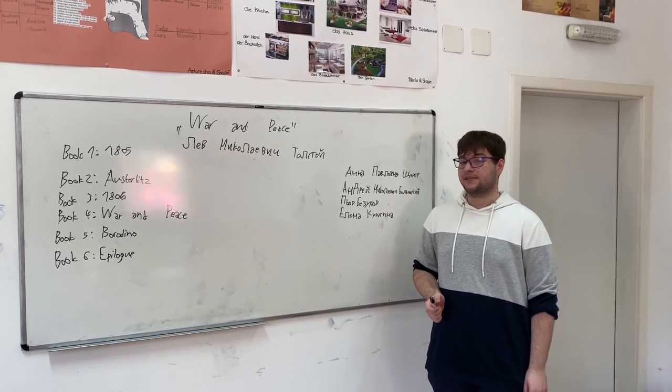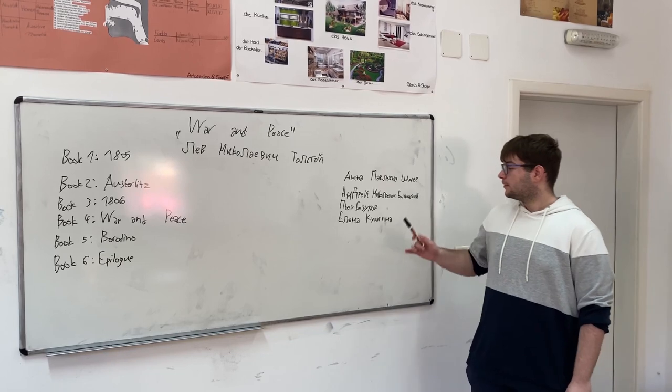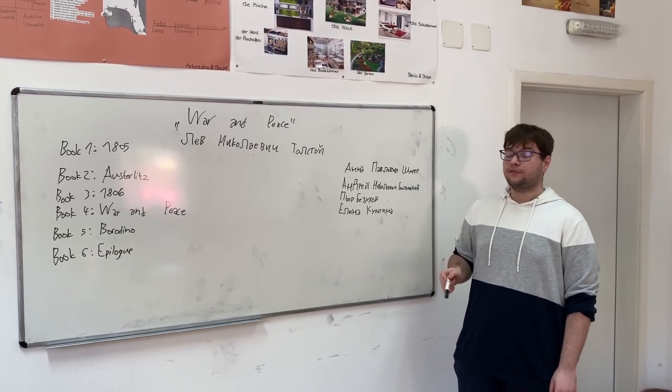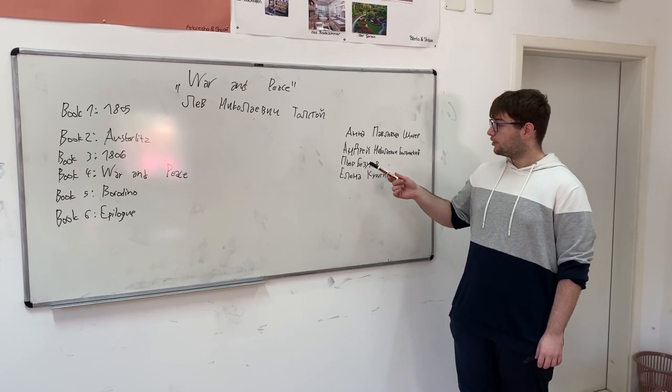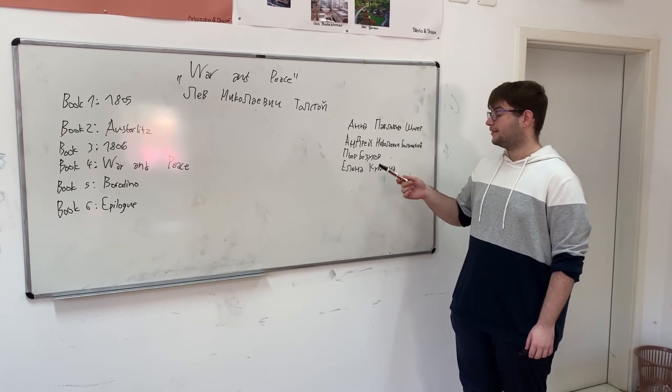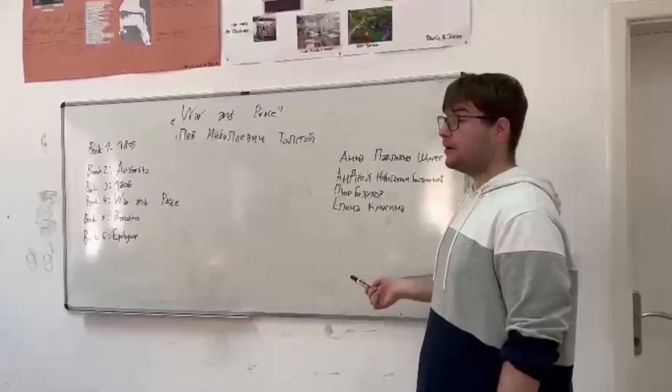In the third book, 1806, Pierre Rezovov goes from France and returns to Russia. And what's important is that we need to talk about Pierre, Andrei and Yelena. Because Pierre and Yelena, they get married.